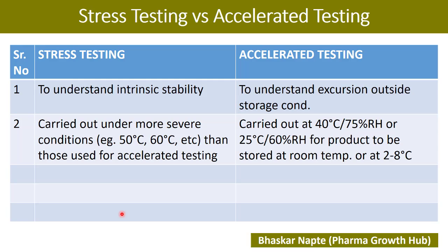The second point for accelerated testing: accelerated testing is generally conducted at 40 degrees Celsius and 75% RH if your product is proposed to be stored at room temperature. Alternatively, accelerated testing can be conducted at 25 degrees Celsius and 60% RH if your product is proposed to be stored at 2 to 8 degrees Celsius. These two possible accelerated conditions are purely based on your proposed storage condition.